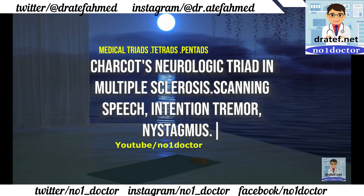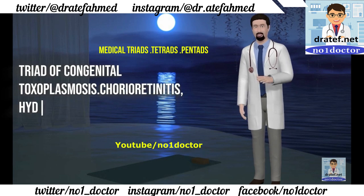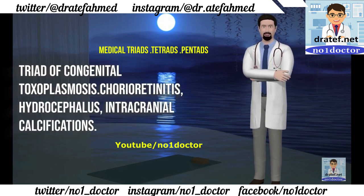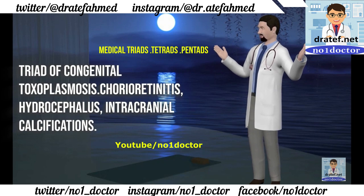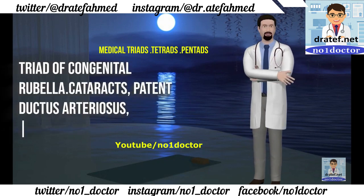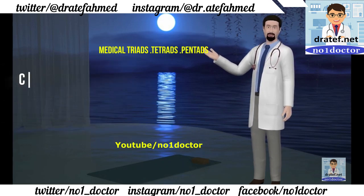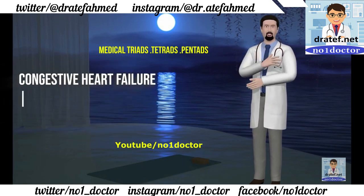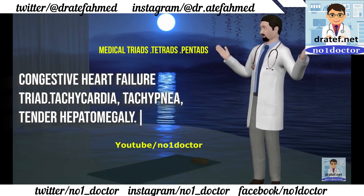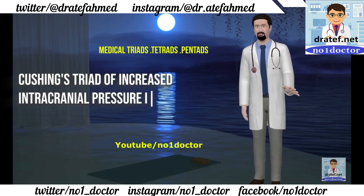Triad of congenital toxoplasmosis: chorioretinitis, hydrocephalus, intracranial calcifications. Triad of congenital rubella: cataracts, patent ductus arteriosus, sensorineural hearing loss. Congestive heart failure triad: tachycardia, tachypnea, tender hepatomegaly. Cushing's triad of increased intracranial pressure in head injuries: bradycardia, bradypnea, hypertension.